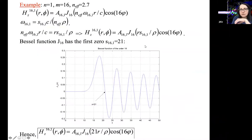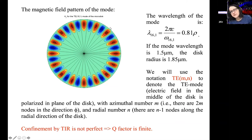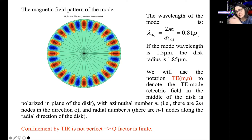We used that to plot the TE 16,1 mode — this is the magnetic field distribution. The electric field distribution can be obtained from Maxwell's equations, and from boundary conditions setting the field to zero at the edge of the disk and looking at the zeros of the Bessel function, you can find the relation between the dimensions of the disk, such as its radius and wavelength. That allows you to design a disk to operate in a certain mode at a particular wavelength.